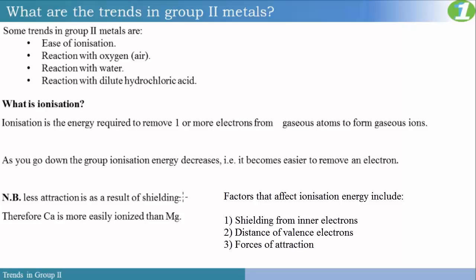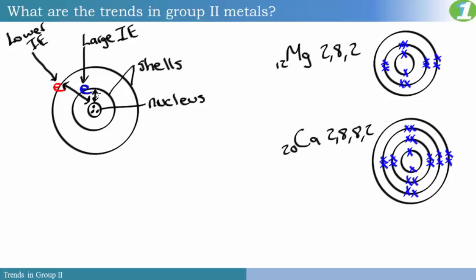Let us see why. Let's look at this atom having two shells. This is the nucleus, and the nucleus contains protons and neutrons. Remember that protons are positively charged. On my first shell, I have electrons here, and on my second shell, I have an electron here. The electron on my second shell, or my valence shell, is the farthest away from the nucleus. The electrons on the first shell are very close to the nucleus. If I want to remove these electrons, I must supply energy. The energy supplied will be used to pull away the electrons from the force being felt coming from the nucleus.